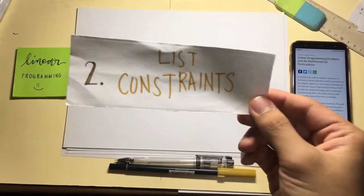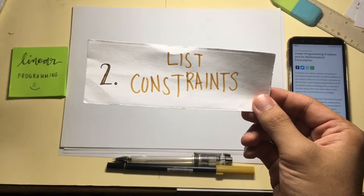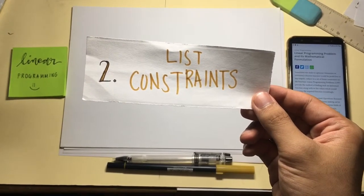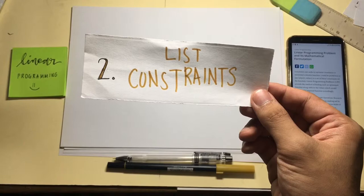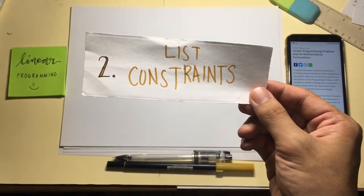Second step is to list the constraints. They are the restrictions that shape how you will attain the objective. These constraints should be translated to linear inequalities that we will use later on.